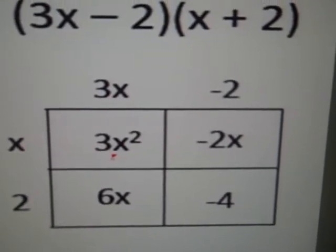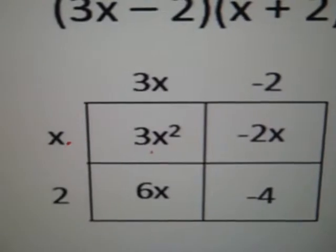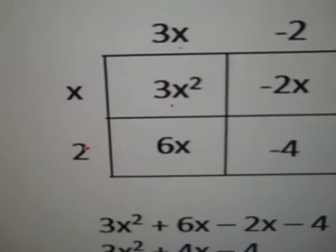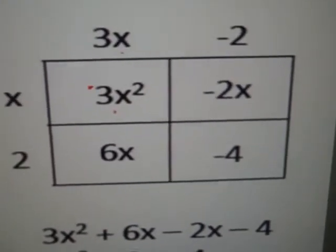And I multiply it diagonally across. 3x times x, 3x squared. Negative 2 times x, negative 2x. 3x times 2, 6x. And negative 2 times 2, negative 4. I write down all these separate terms.